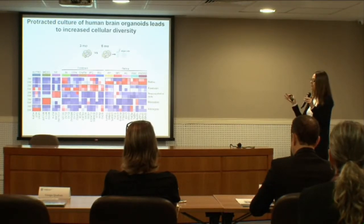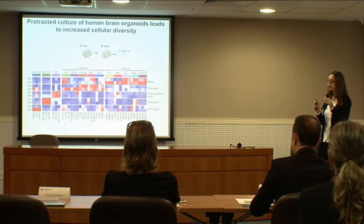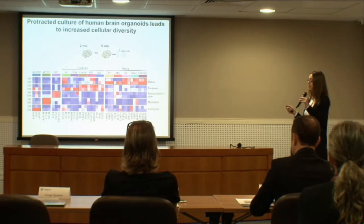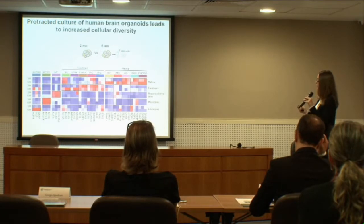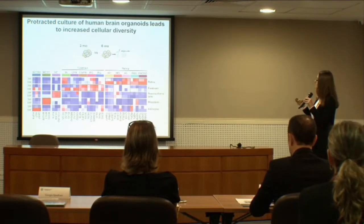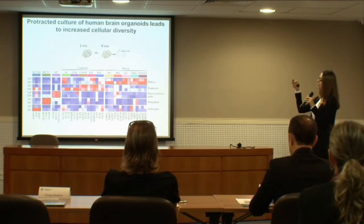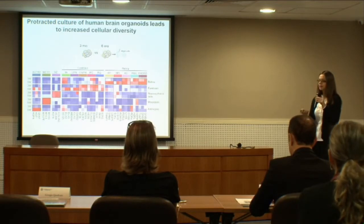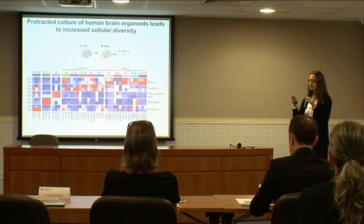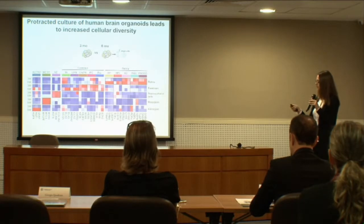This tells us that it is really important to culture these organoids for a very extended time if you want to model disorders that affect high-order brain function. If you model them in organoids that are only three months old you would not have all the relevant cell types. Our protocol not only allows organoids to survive for a very long time, but over time they keep generating different cell types and their cellular diversity increases.